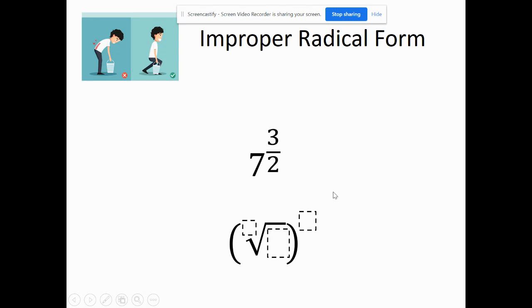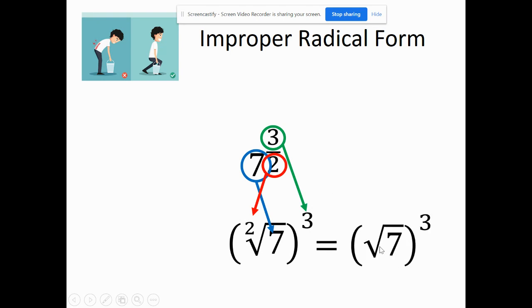Now the seven is going to go inside. Technically I don't have to have the two there because it's a square root, but I put it there just to show where the numbers go. We're going to take that answer to the third power. That would be the better way to write it because it's assumed it's a square root if there's not a number there.